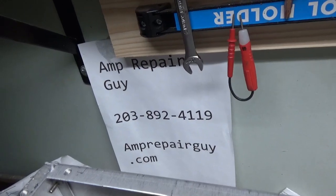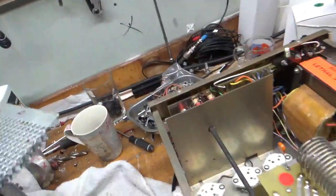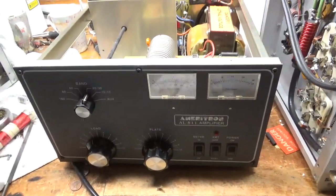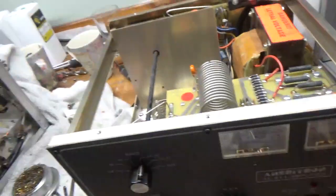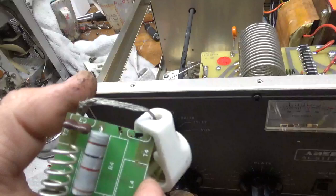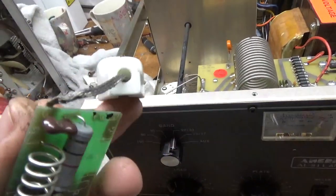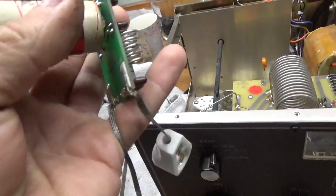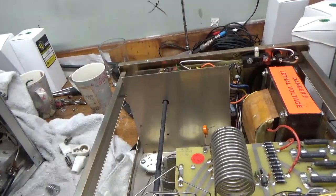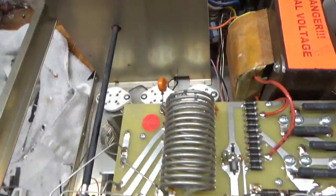Plugging away on amplifiers here. Today we are working on an Ameritron AL-811. Plate choke was damaged. The braided wires for the anode caps are severely frayed, so I'll replace those. I have a new plate choke here. I'm going to add the gas discharge tubes.